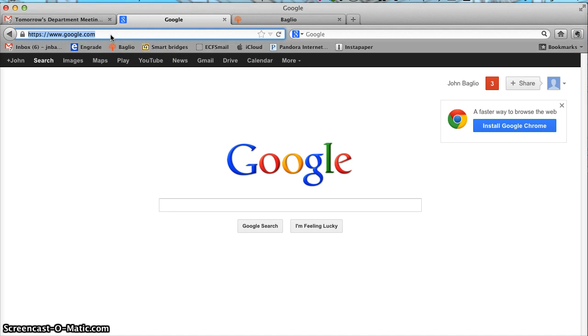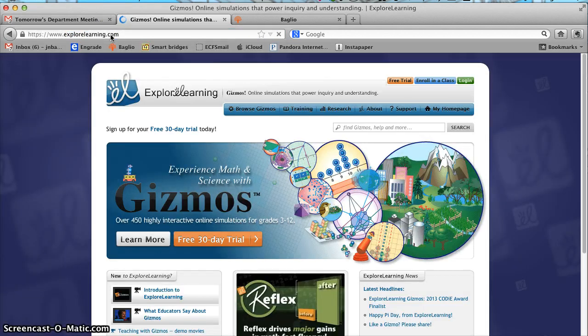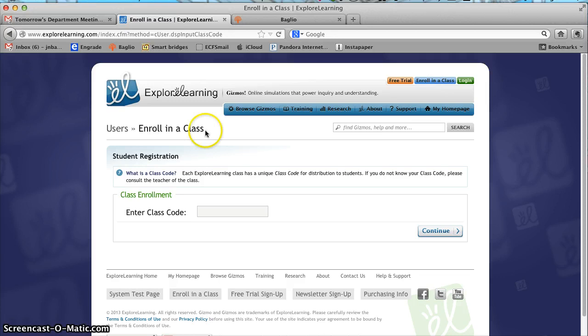So first you go into your browser and you type in explorelearning.com. This will take you to the main page and what you need to do is enroll in a class. On my website you will have been given an enrollment code. This would be different for each of the sections of my class.